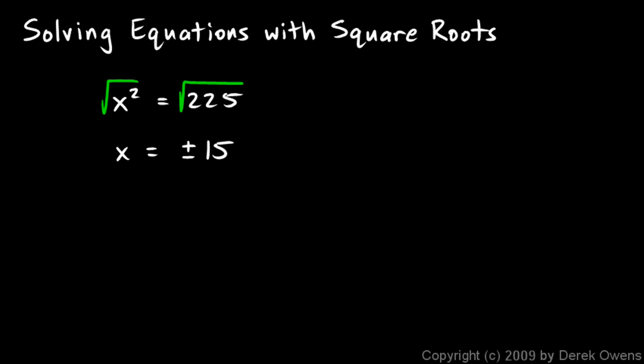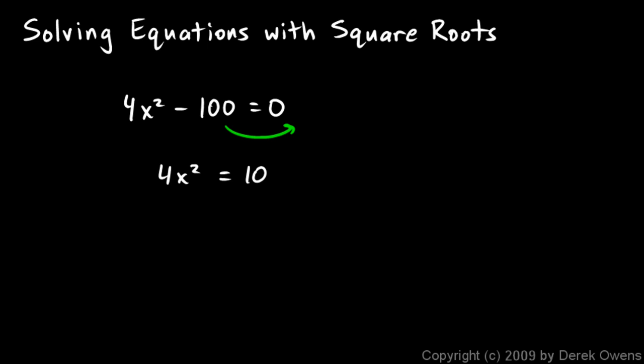This represents both answers there. Plus 15 or positive 15 is one answer and negative 15 is the other. Our next example is 4x squared minus 100 equals 0. The easiest way to solve this is to transpose the 100, put it over on the other side and it becomes positive.